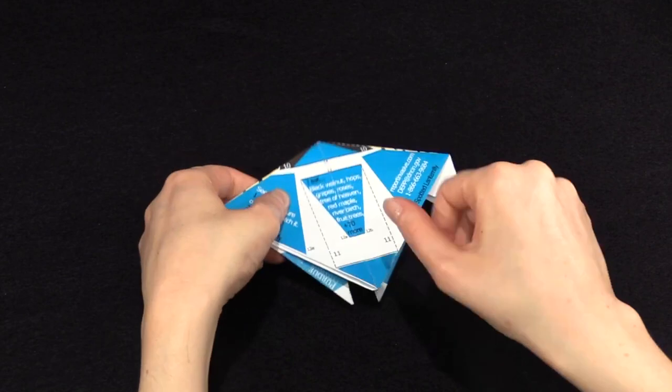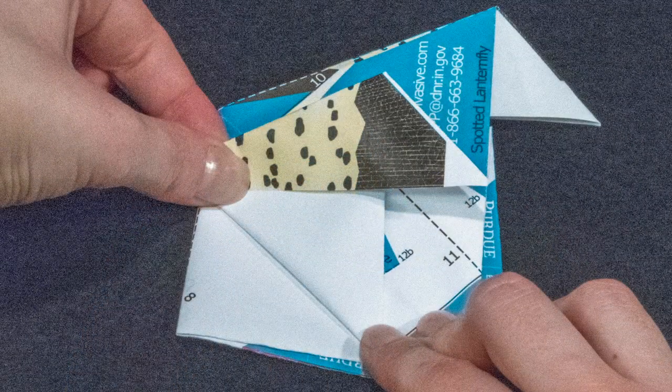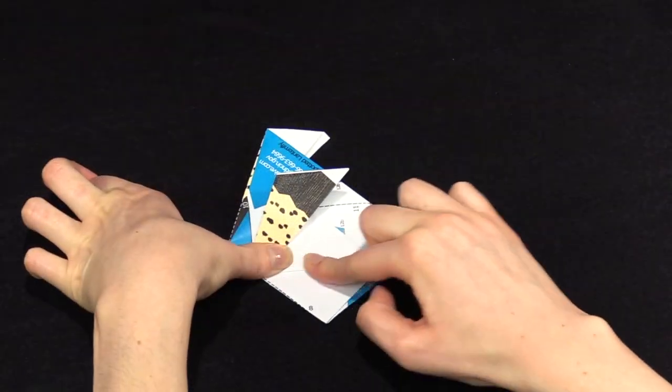Flip the paper over and find the lines labeled 11. Fold and unfold, making sure you are only folding the top layer.